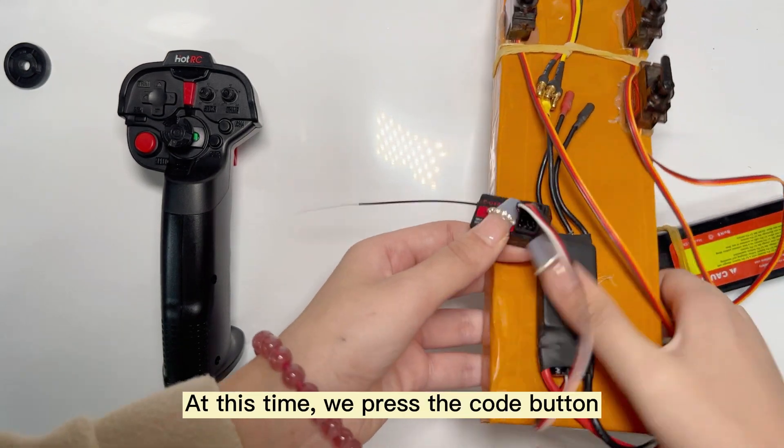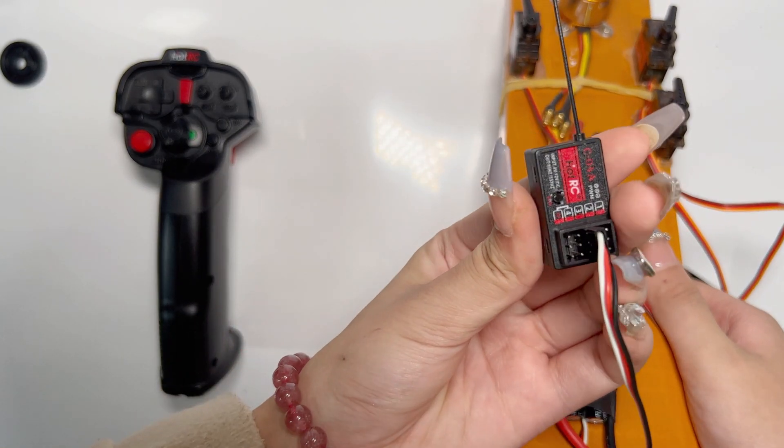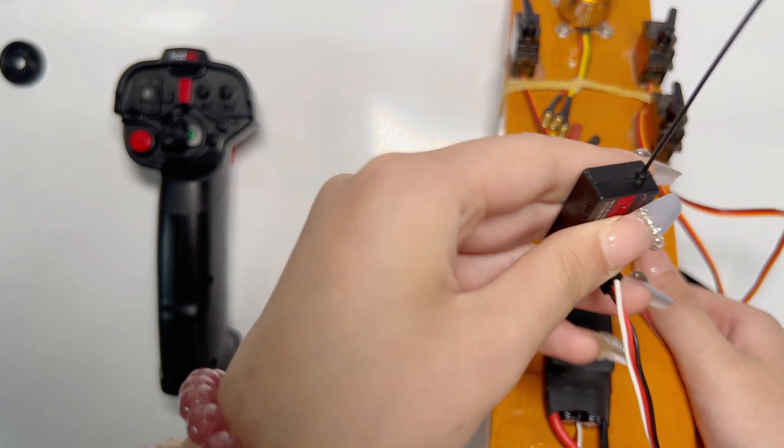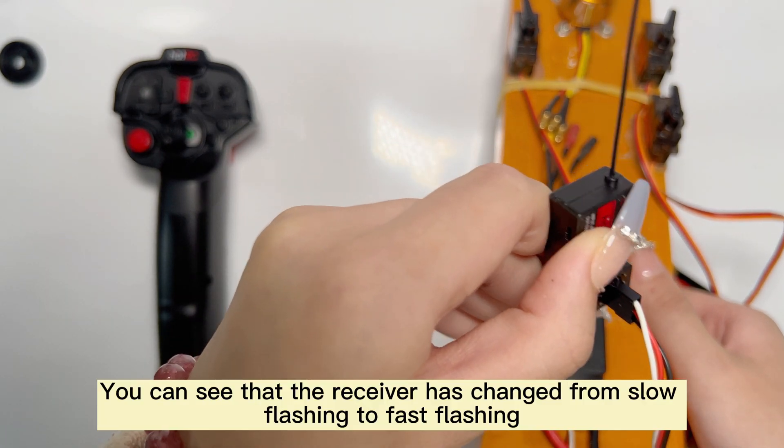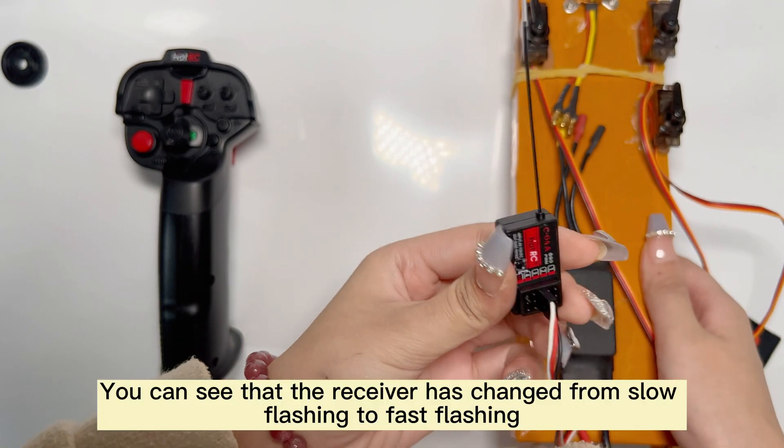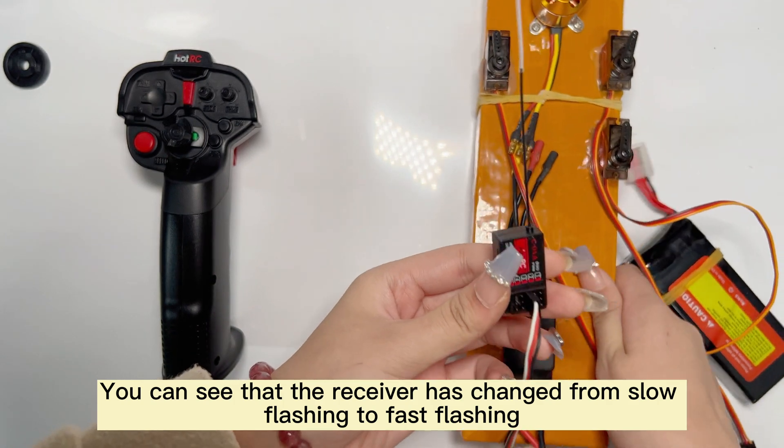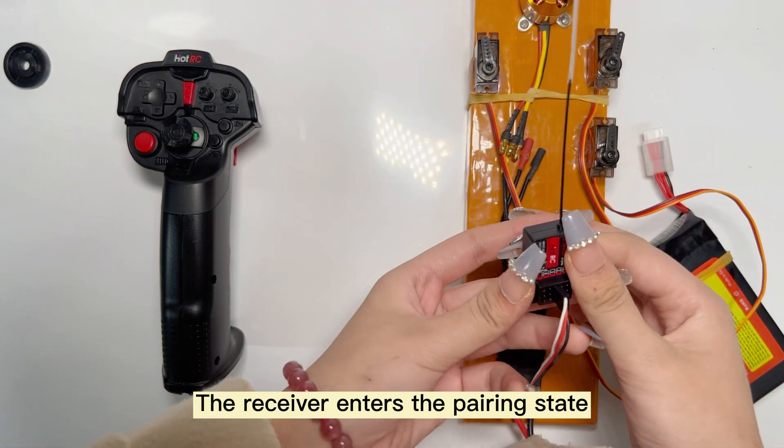At this time, we press the code button. You can see that the receiver has changed from slow flashing to fast flashing. The receiver enters the pairing state.